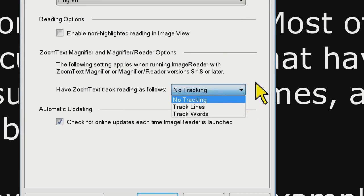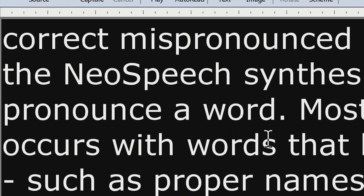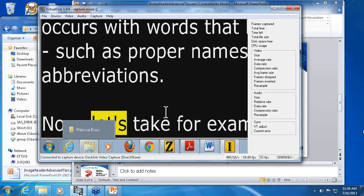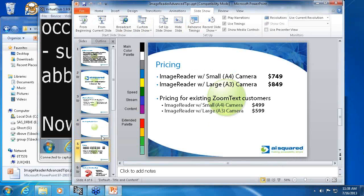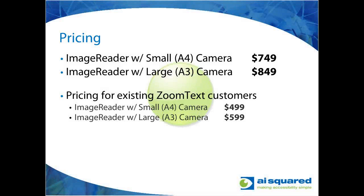That covers what we're going to demonstrate today. Before we open to Q&A, I wanted to reiterate the pricing: the retail price with the small A4 camera is $749, and the large A3 camera is $849 — that's software and camera. But if you're an existing ZoomText customer, you get a $250 discount, so it's $499 and $599 if you already own ZoomText.